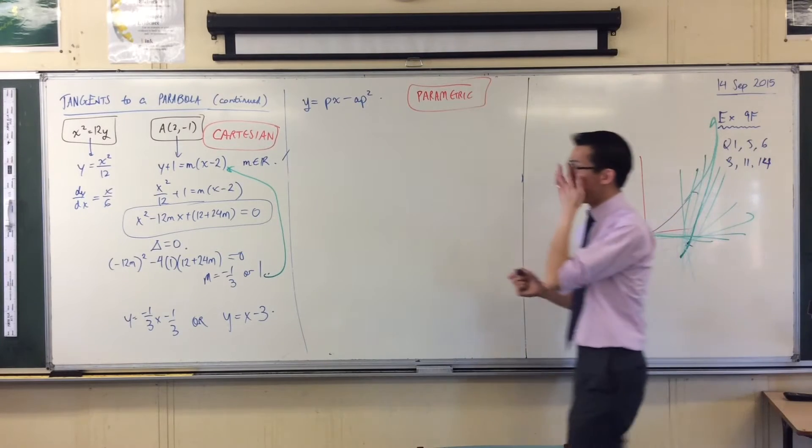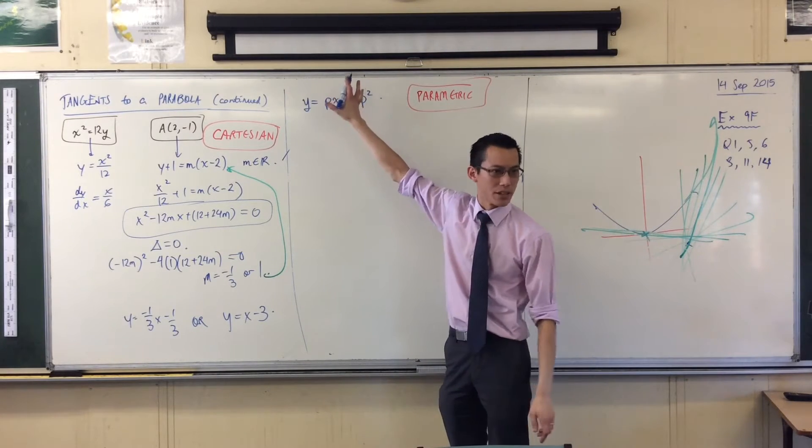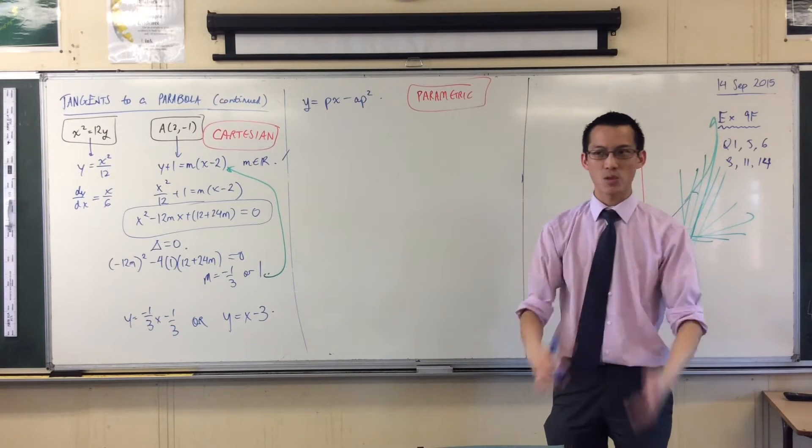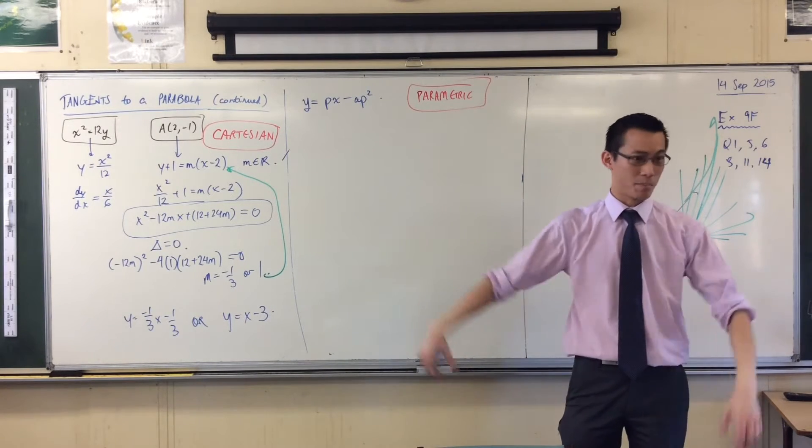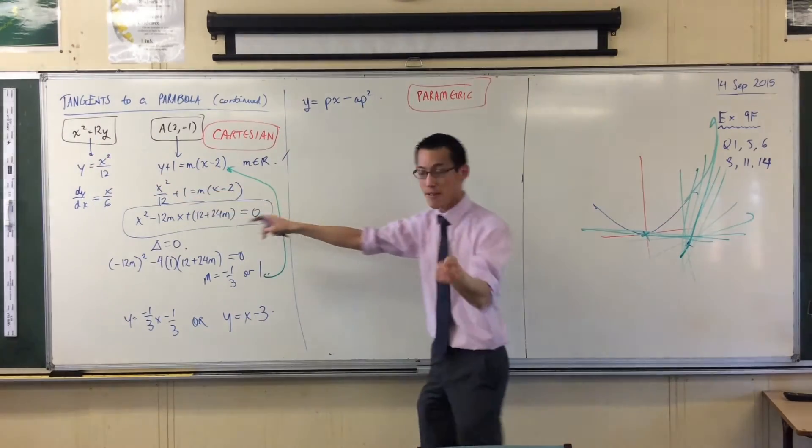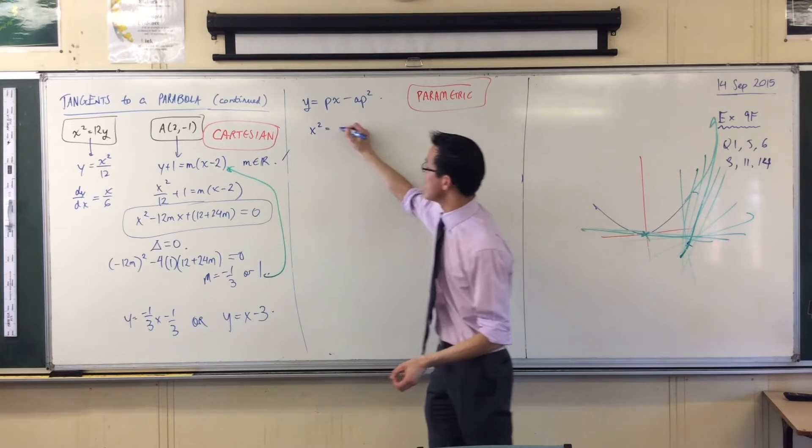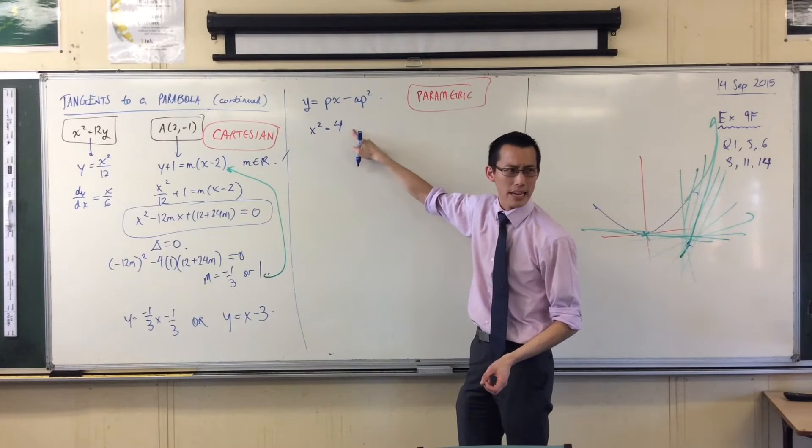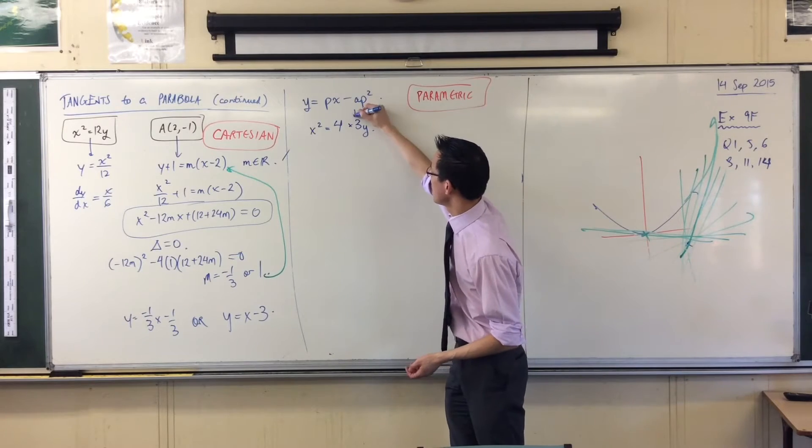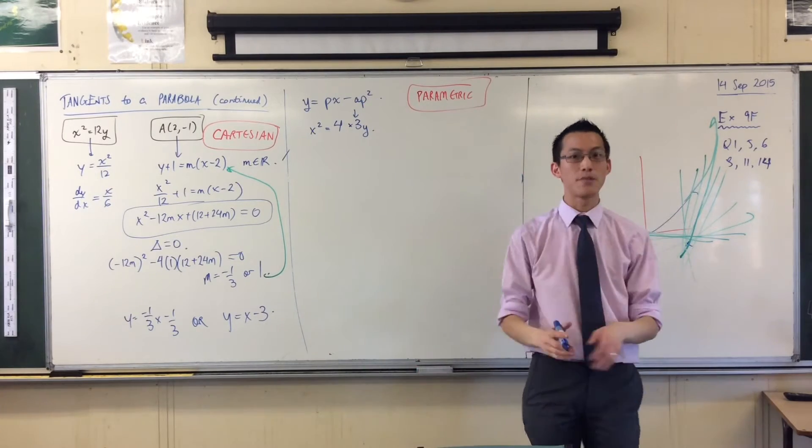First thing I'm going to do is, this is what I'm going to get to in a second. To use a parameter, I need stuff in x squared equals 4ay form. That's part of the reason why we introduced that form in the first place. So x squared equals 12y. So I'm just going to rewrite that as x squared equals 4, what's my a? It'll be 3. There it is. There's the focal length. Bam, it just falls out.